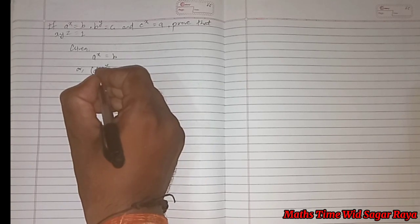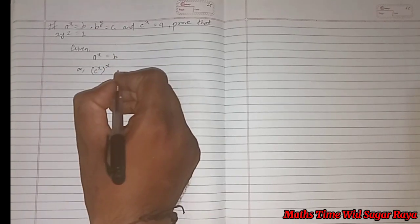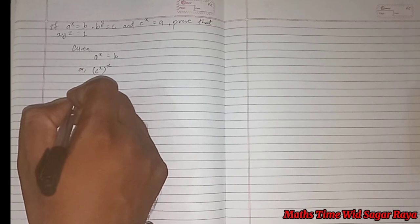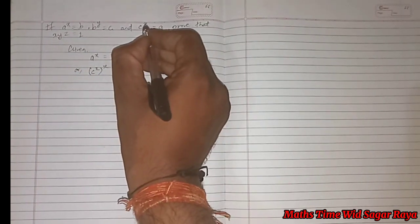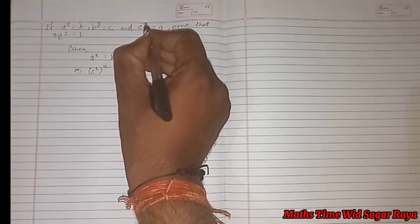Sorry, the question is mistake, okay. Here it should be c power z.